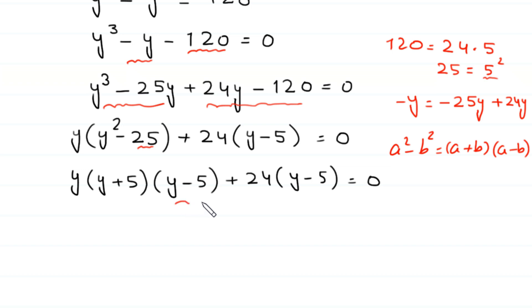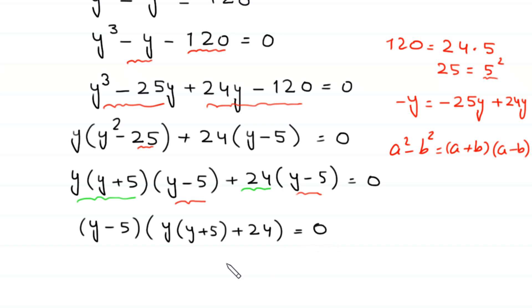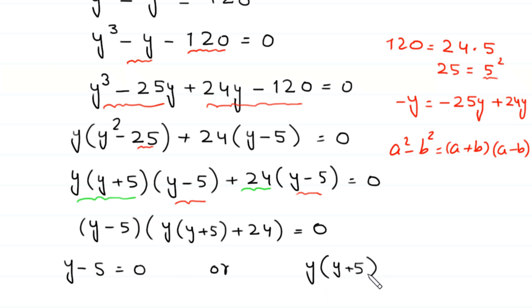We can see that (y minus 5) is a common factor. Factoring it out: (y minus 5) times (y times (y plus 5) plus 24) equals 0. So either y minus 5 equals 0, or y times (y plus 5) plus 24 equals 0.